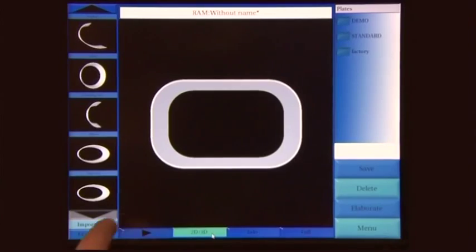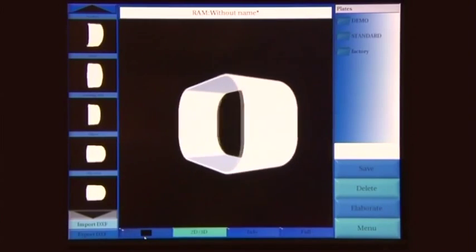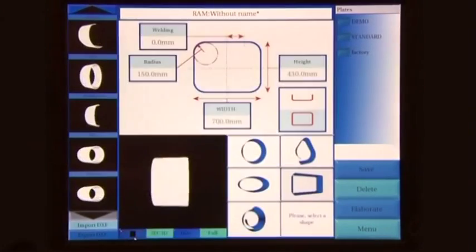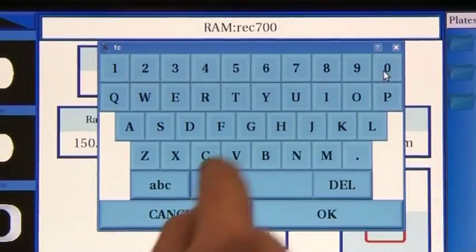We enter the dimensions of the tank: width, joint radius, and height. It's possible to display the three-dimensional rendering of the shape. Let's give a name to the shape and save it.